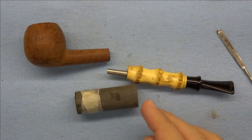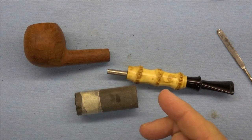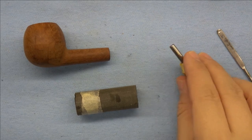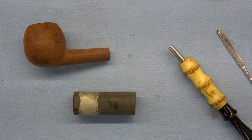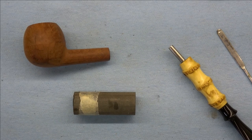Take this over to the lathe, face it off, drill a 3/16th hole to accommodate the stainless steel tubing, and then we'll part off a piece that's one eighth inch, and I'll come back once I have that.